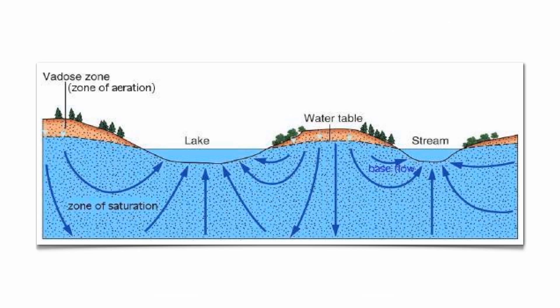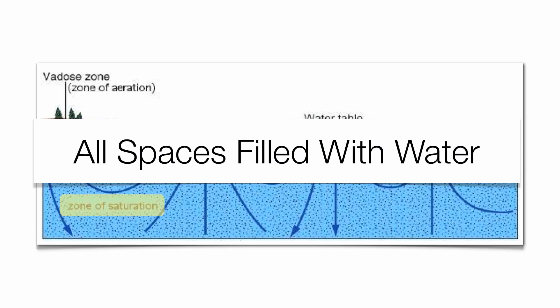Water falls onto the surface, sinks into the ground, and travels down through the soil as far as it possibly can. Eventually it hits a layer of rock called an impermeable layer, which will not allow water to pass through any further. At that point the water starts to accumulate into a zone called the zone of saturation, where all pore spaces between soil particles are completely filled with moisture. That's an important layer because it's where a lot of our fresh water comes from.